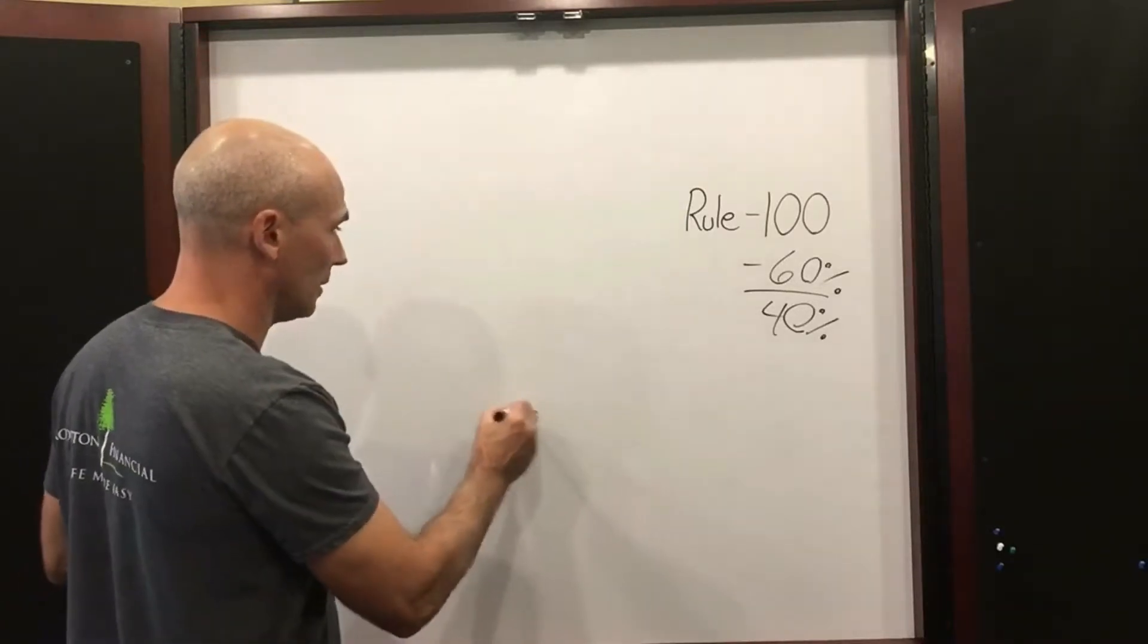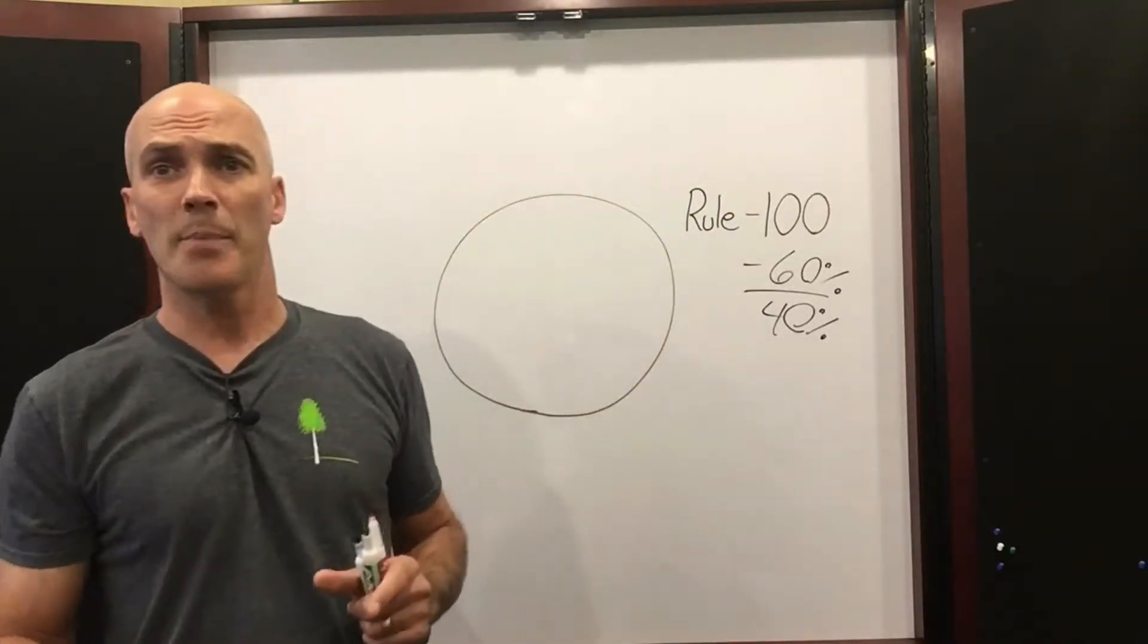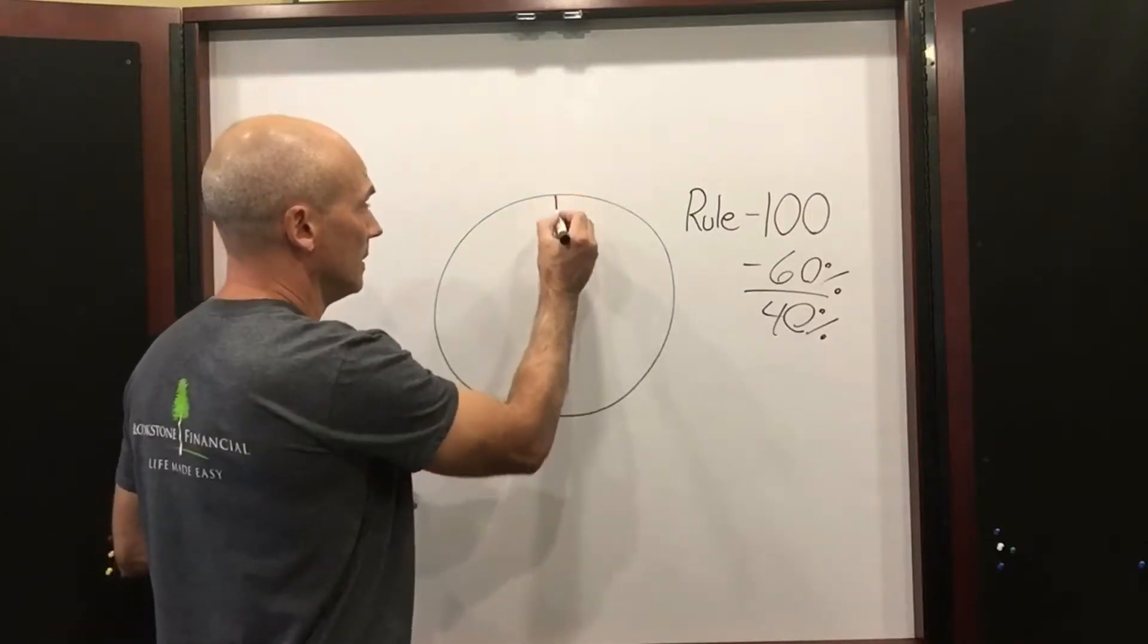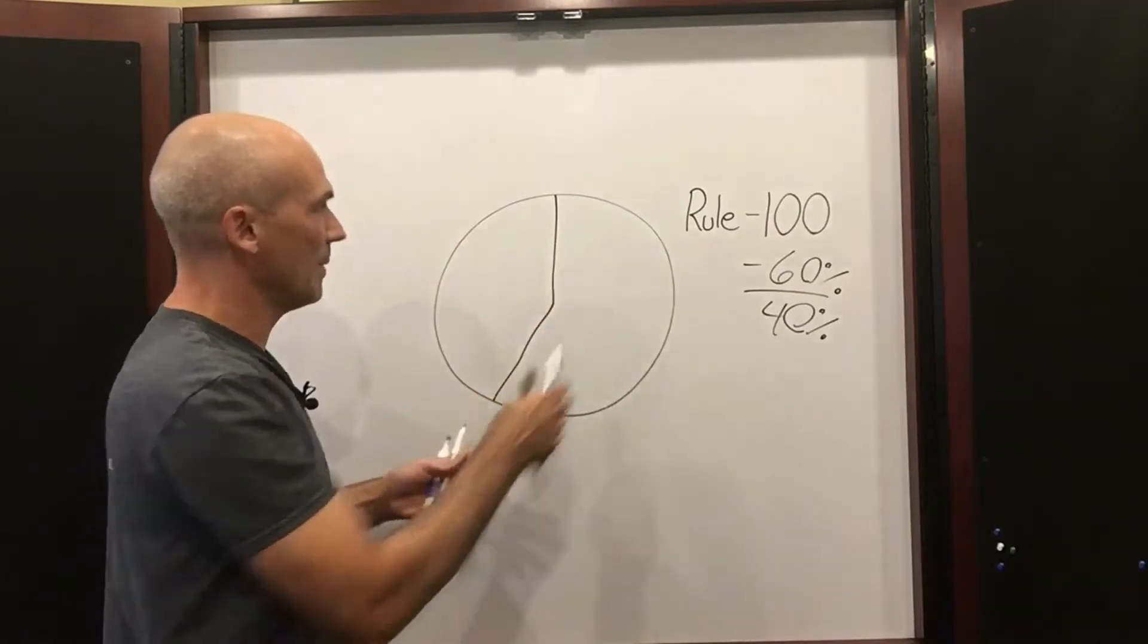Now let's draw a little pie chart here. And we're going to overlay Rule 100 on that pie chart. First of all, here's our 60% over here on the right, and that represents our safe money.